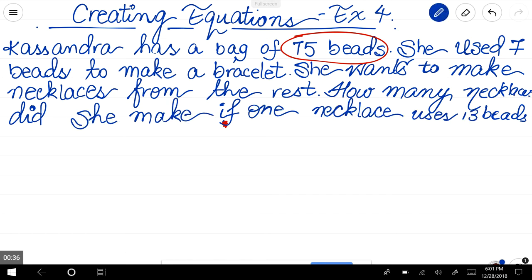We will go step by step. First, we read the question. Now we are going to identify the meat of the problem. Meat is basically highlighting the important parts of the problem. The meat points I would highlight or circle are: she uses seven beads to make a bracelet, she wants to make necklaces, one necklace uses 13 beads, but we don't know how many necklaces we need to make.